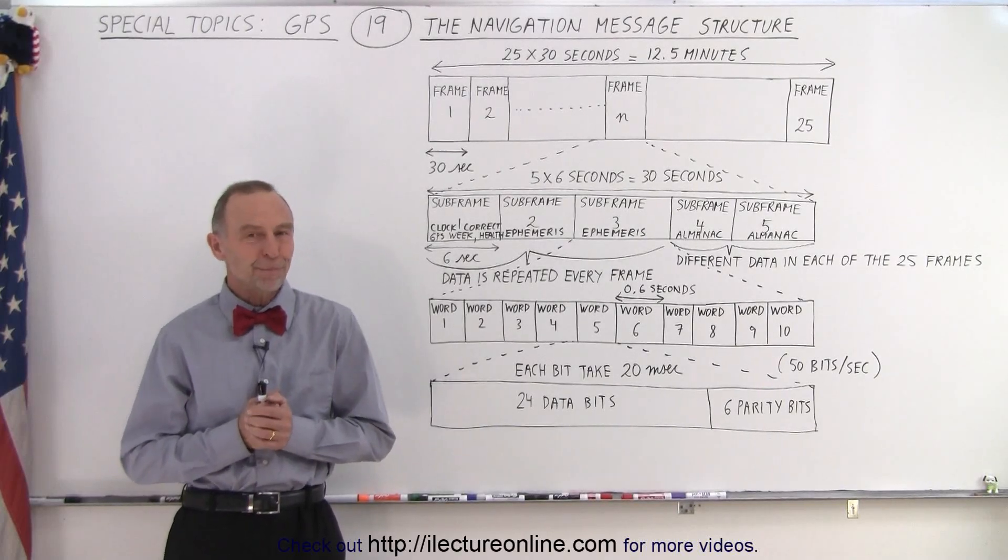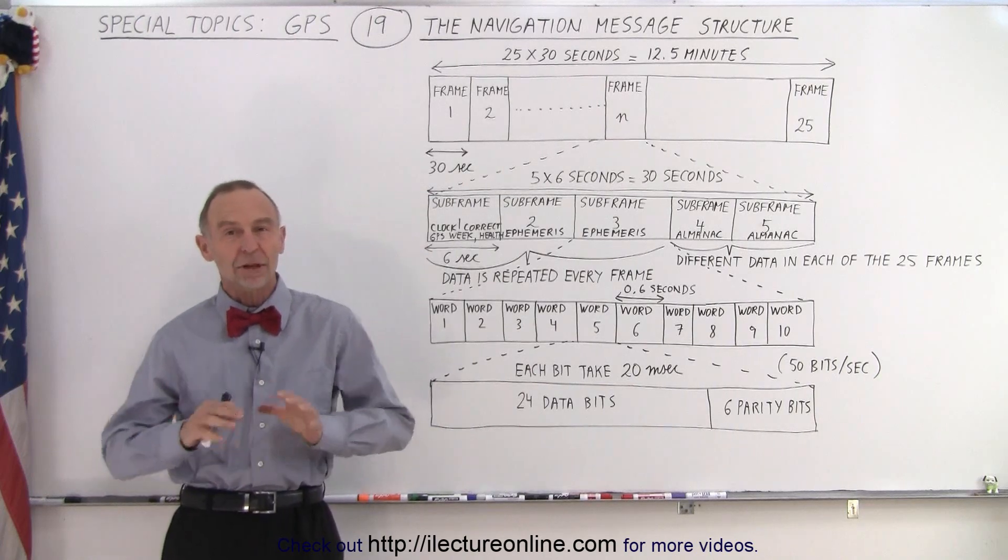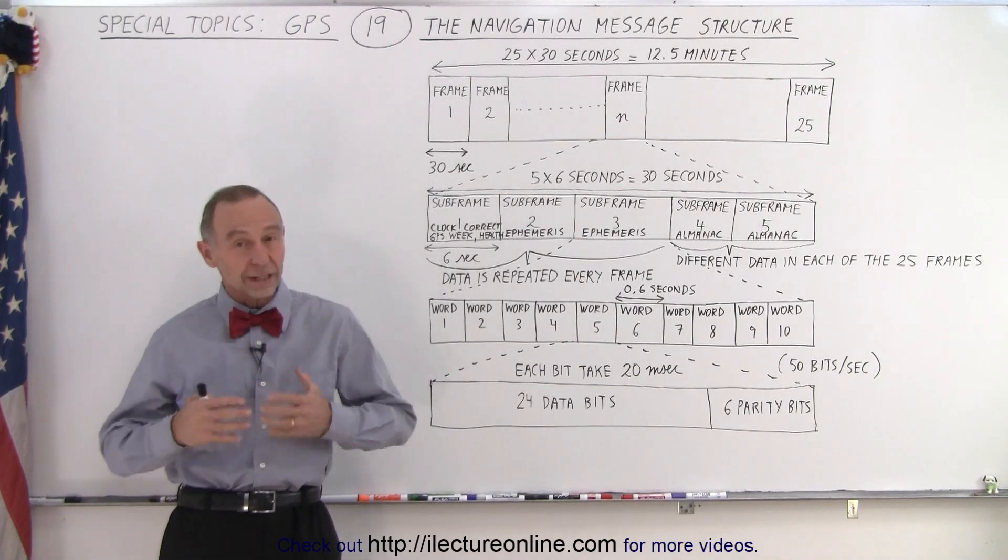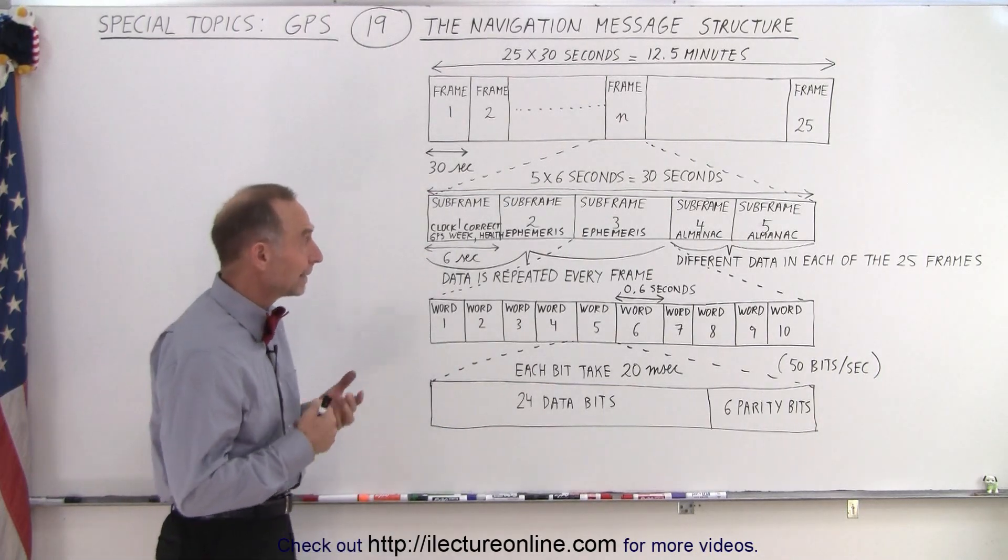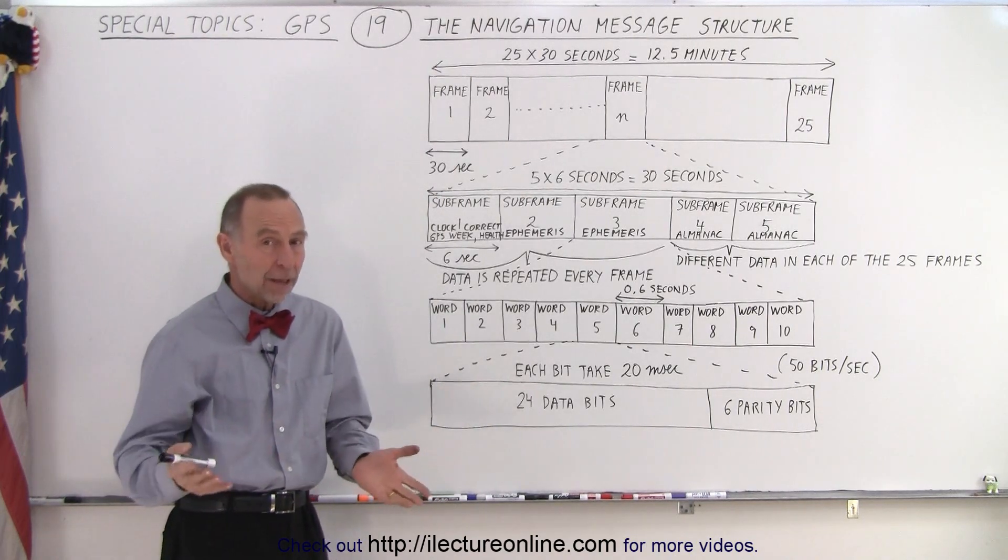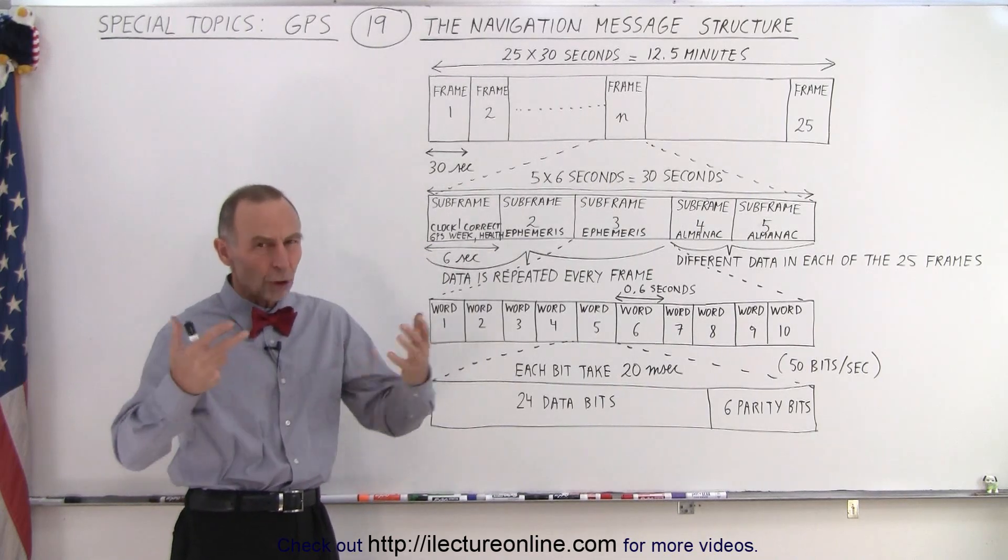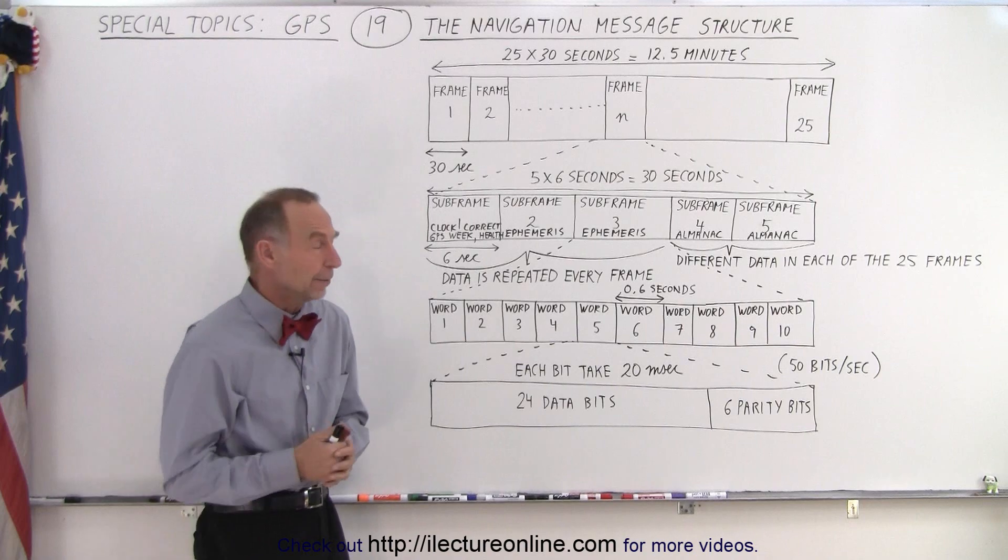Welcome to our Lecture Online. Before we get into the details of the navigation message, let's look at the overall structure. It's kind of an interesting structure. Data is sent from all the satellites to the ground receivers, wherever they may be, at 50 bits per second. So it takes a while to get all the information from the satellites to the ground.